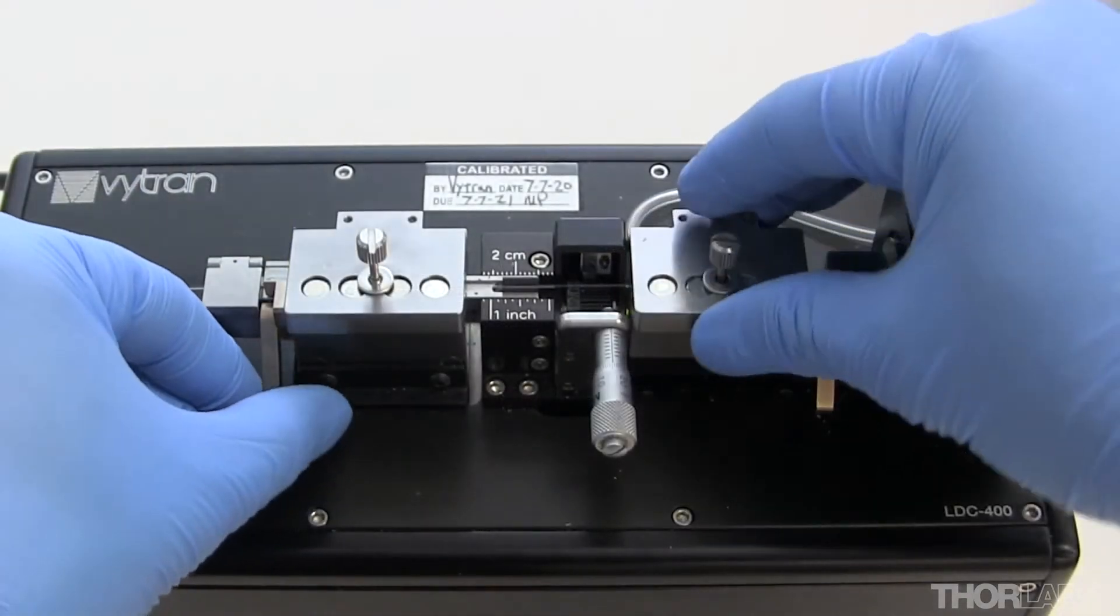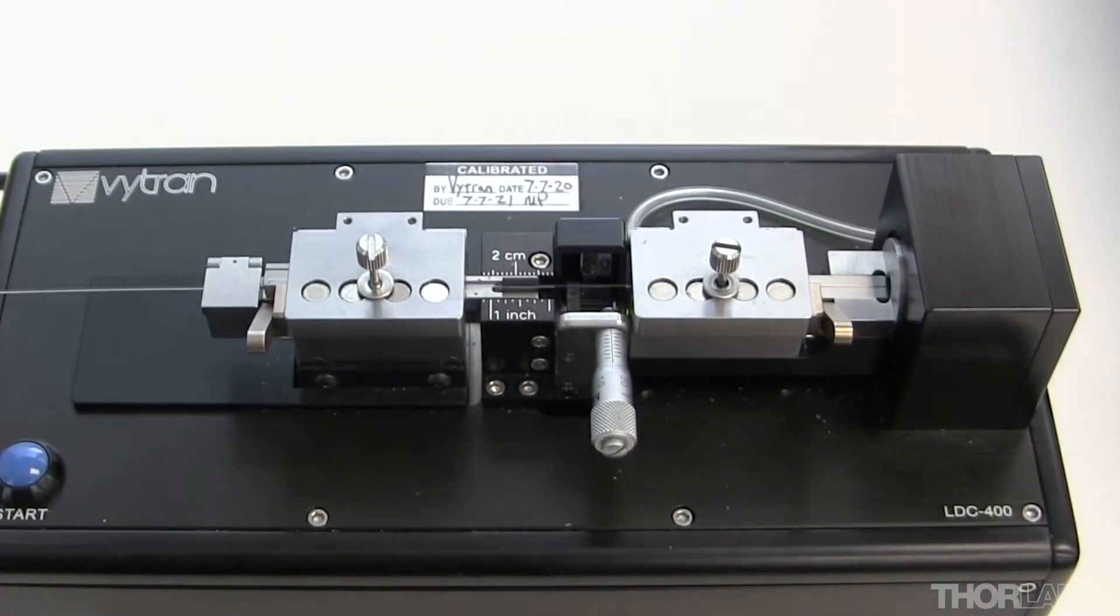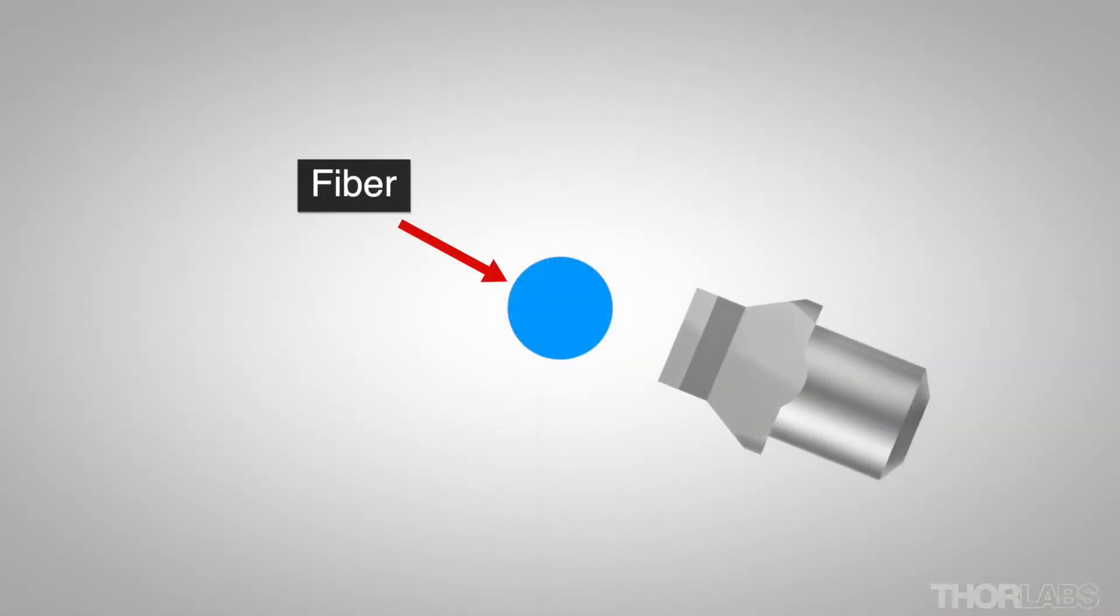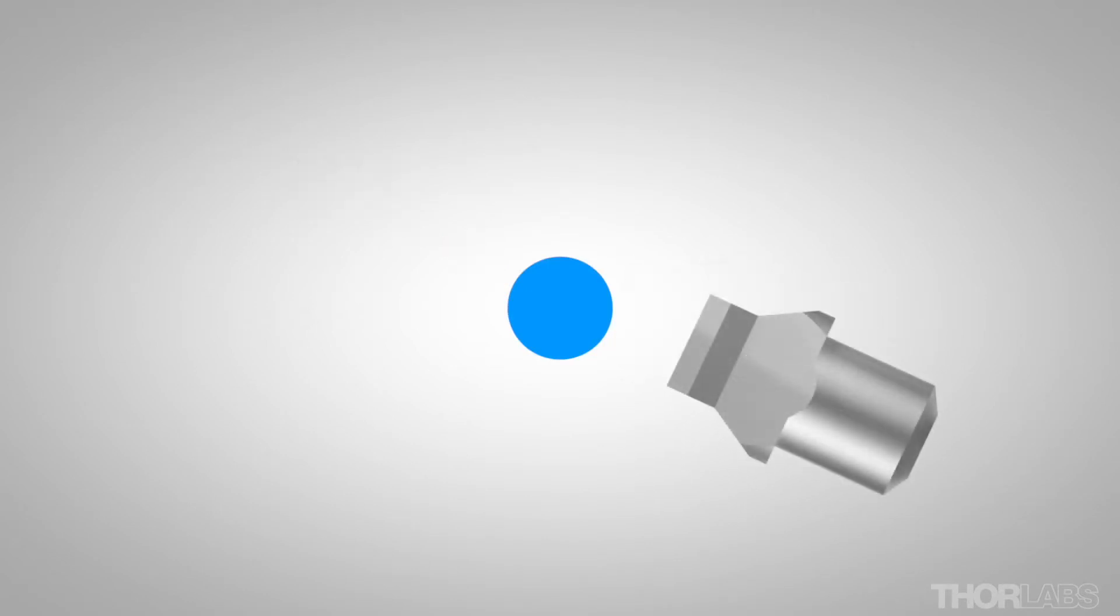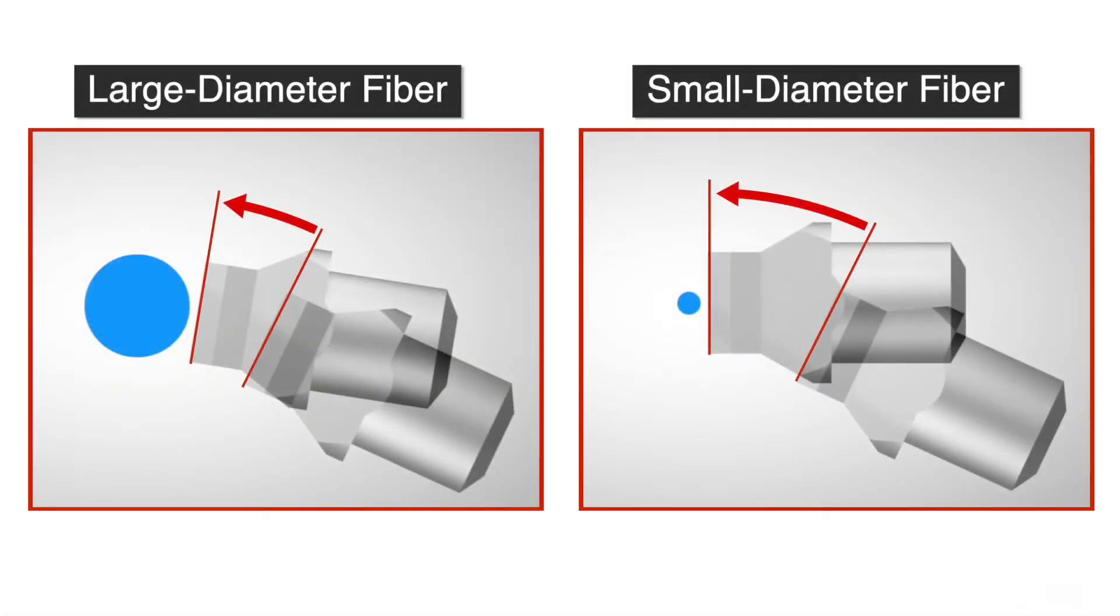When a cleave is performed, once the required fiber tension has been achieved, the blade will move forwards to its pre-cleave position, where it will be close to but not touching the fiber. The distance of this initial move is the blade offset distance plus the pre-cleave advance distance. This initial forward move will be smaller for large diameter fibers than for smaller diameters.